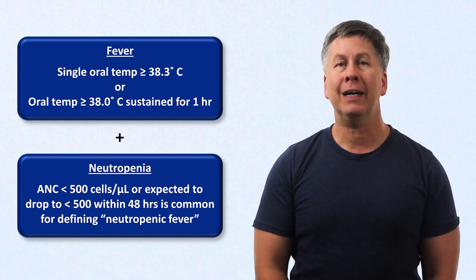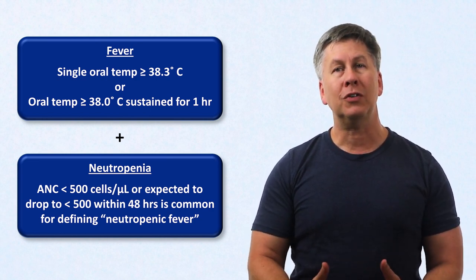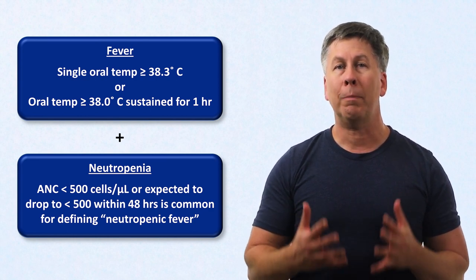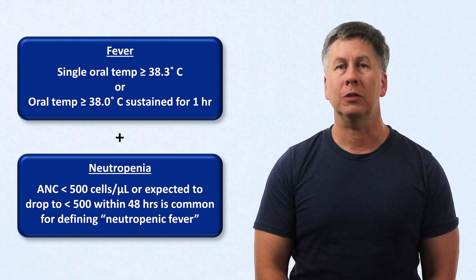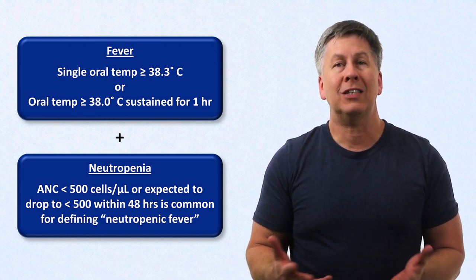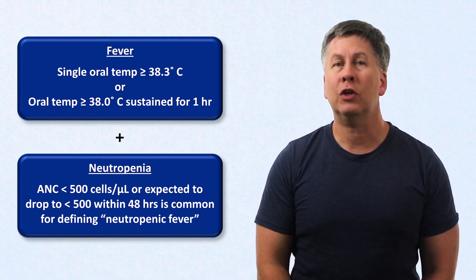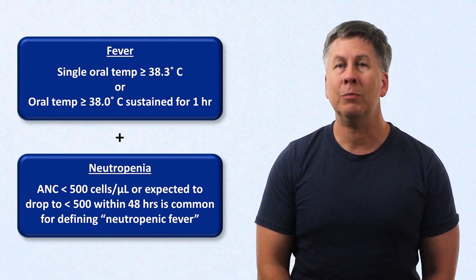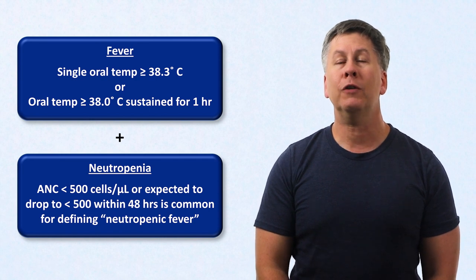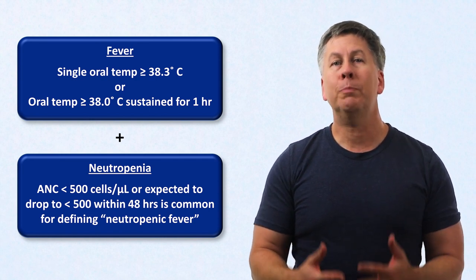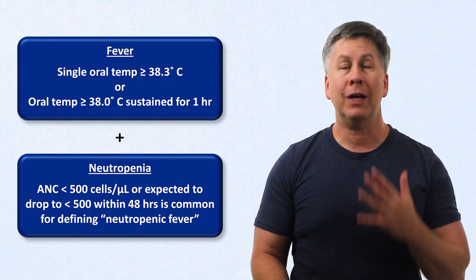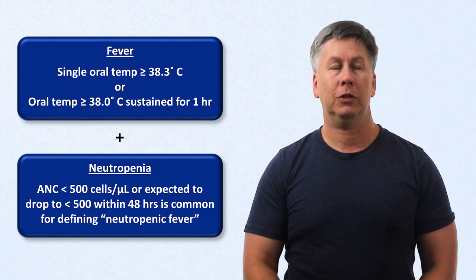The term absolute neutrophil count distinguishes this value from the neutrophil percentage, which is the percentage of white blood cells that are neutrophils. In most US hospitals, labs don't report the ANC separately, but rather clinicians calculate it themselves by multiplying the total white blood cell count by the neutrophil percentage, which includes both segmented neutrophils and the less common band neutrophils.